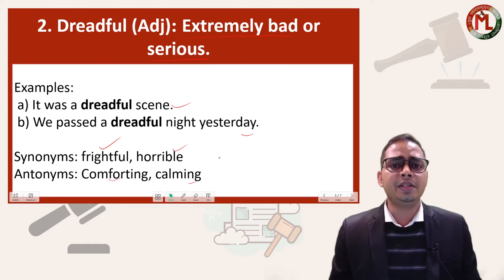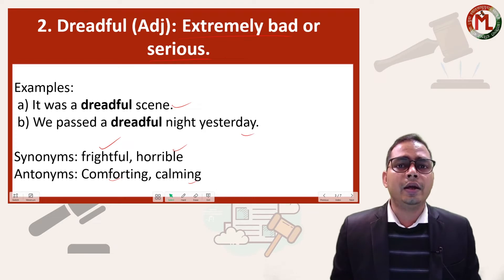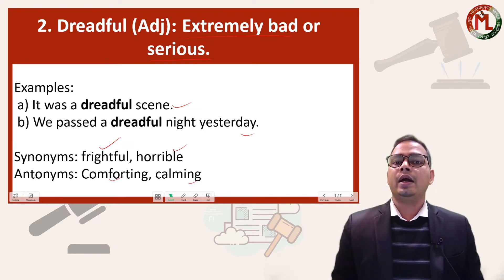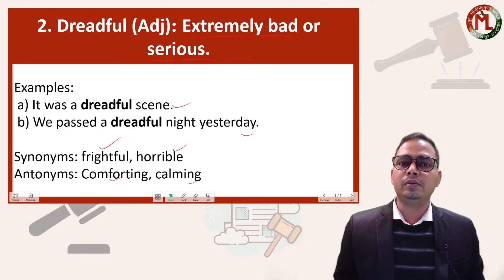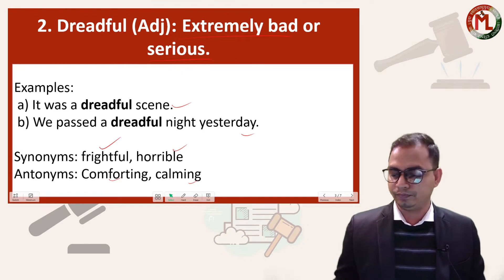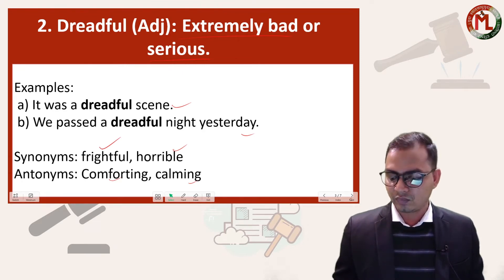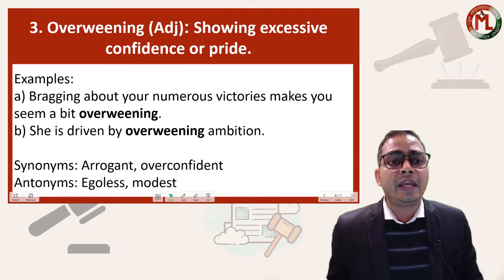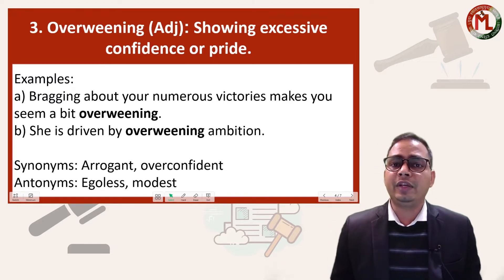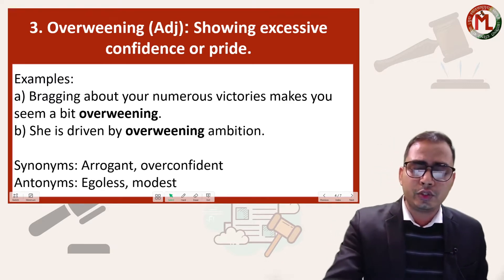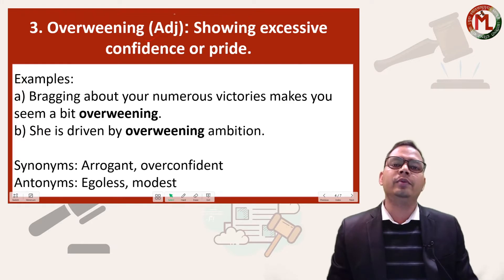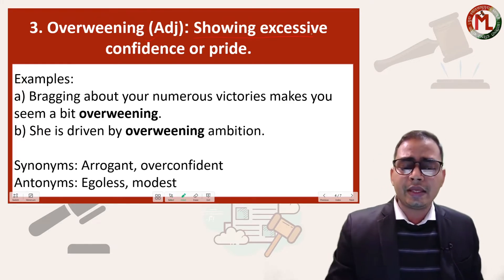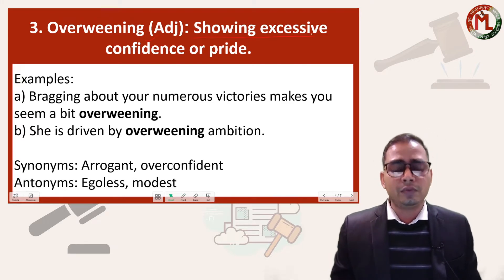So whenever something is extremely bad, you can use 'dreadful' in place of 'bad.' The third word in the list is 'overweening.' Overweening is also an adjective. It can be used for a person, situation, or thing showing excessive confidence or pride.